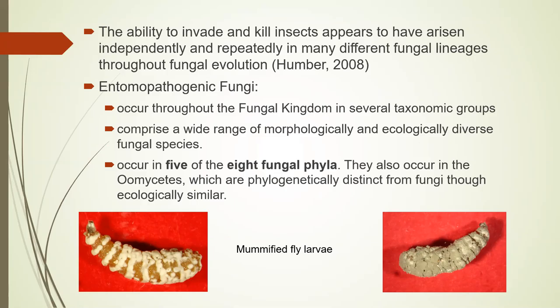The entomopathogenic fungi occur throughout the fungal kingdom in several taxonomic groups, comprising a wide range of morphologically and ecologically diverse species. They occur in five of the eight fungal phyla, and also in the Oomycetes, which, although now known to be phylogenetically distinct — essentially bleached-out algae — are ecologically similar and will be included in this discussion.